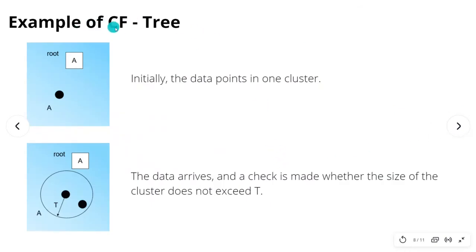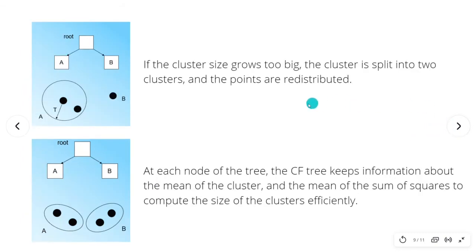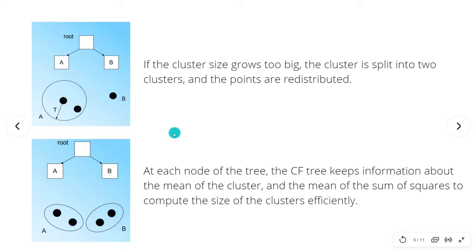For the other example, which is the CF tree, we can see that first we have the data points in one cluster. Then the data arrives and a check is made whether the size of the cluster does not exceed T — T is our threshold. If the cluster size grows too big, the cluster is split into two clusters and the points are redistributed. We have two new clusters, A and B, each one with its subclusters. At each node of the tree, the CF tree keeps information about the mean of the cluster and the mean of the sum of the squares to compute the size of the clusters efficiently. All of this is the Cluster Feature, which is like the statistical summary.